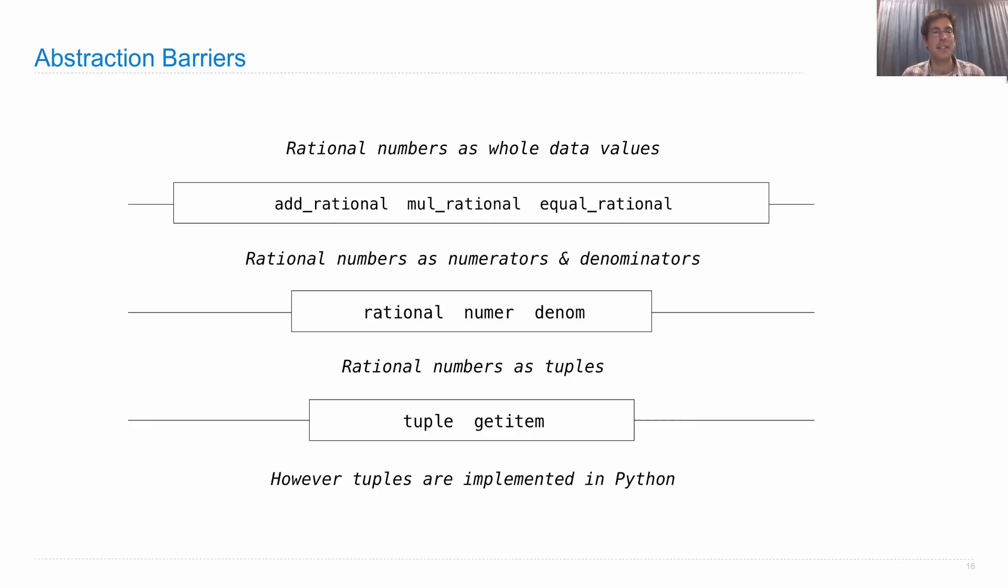At the next level down, rational numbers are treated as numerators and denominators, and their parts can be accessed through the rational function to generate a rational number from a numerator and denominator, or the numerator and denom functions that actually select for those parts.